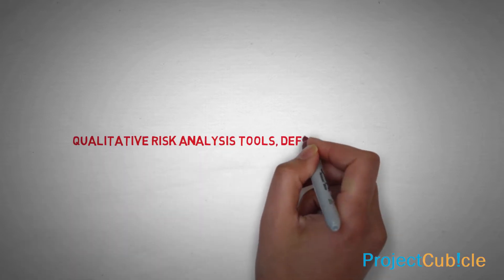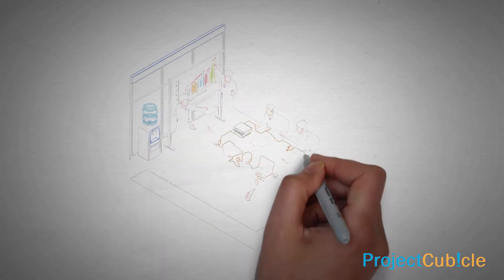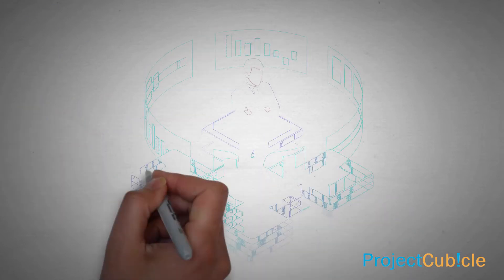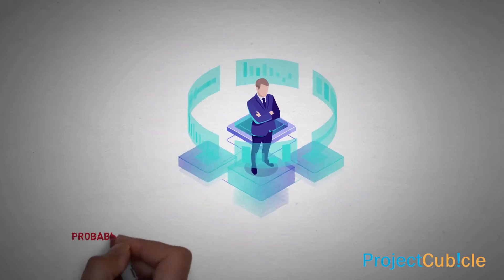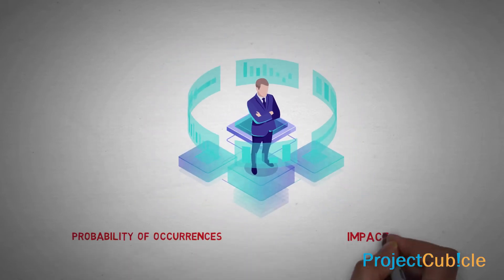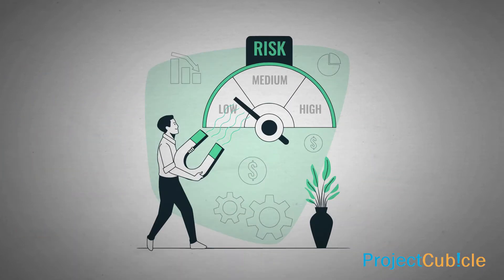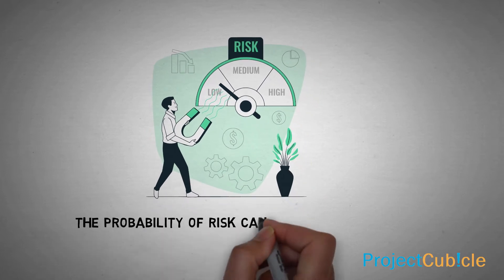Risks can be defined as uncertain events or conditions that have the potential to impact one or more project objectives. Qualitative risk analysis is the process of evaluating individual project risks, considering their probability of occurrence and impact. As a result of analysis, project risks can be classified into three groups according to their degree of impact: low, medium, and high.